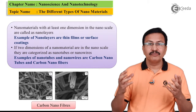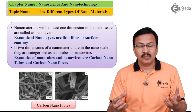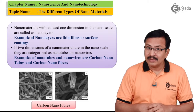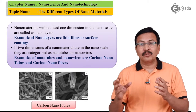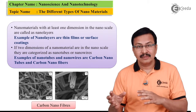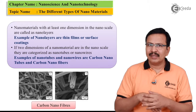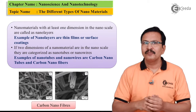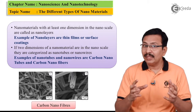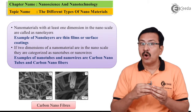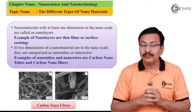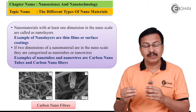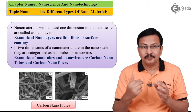An example of these nanowires are carbon nanotubes and carbon nanofibers. How do we differentiate between them? Carbon nanotubes are basically hollow, whereas carbon nanofibers are filled.